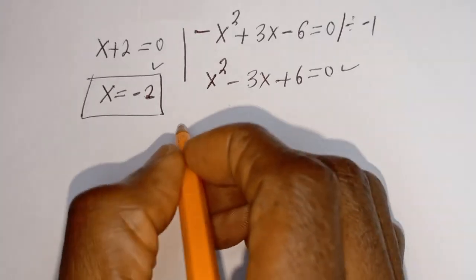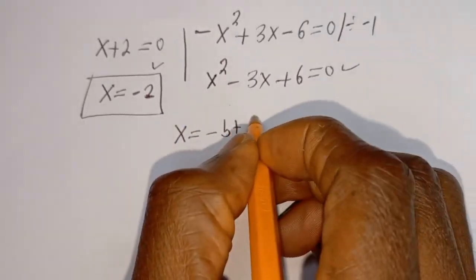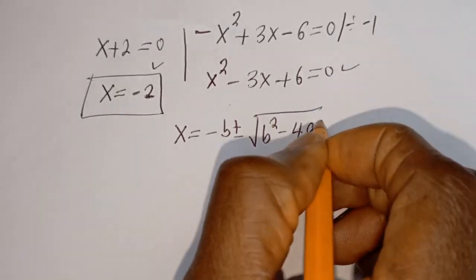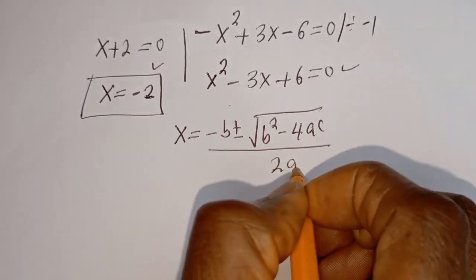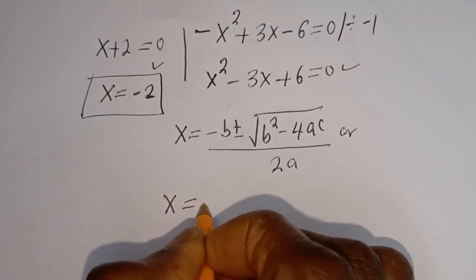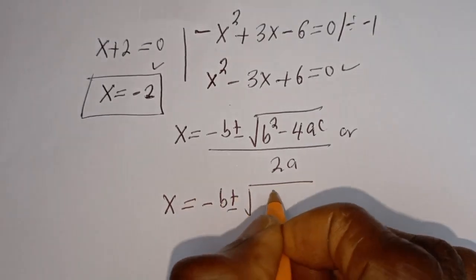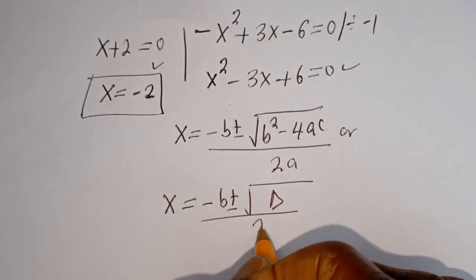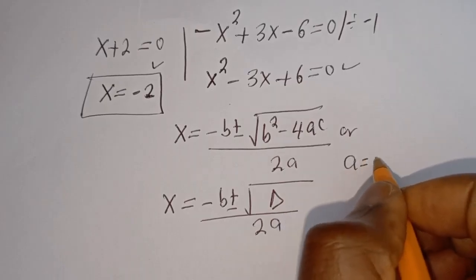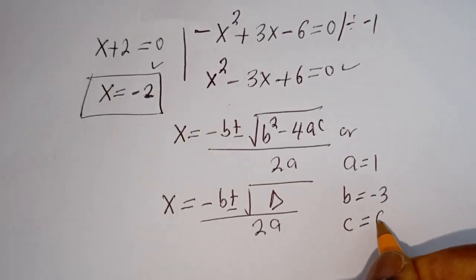The quadratic general formula is: s is equal to minus b plus or minus square root of b squared minus 4ac, over 2a. From this equation, a is equal to 1, b is equal to minus 3, and c is equal to 6.